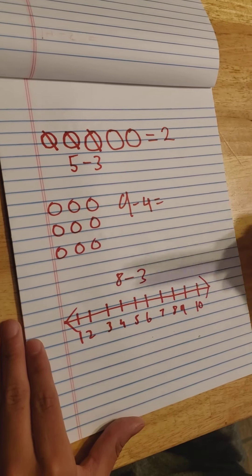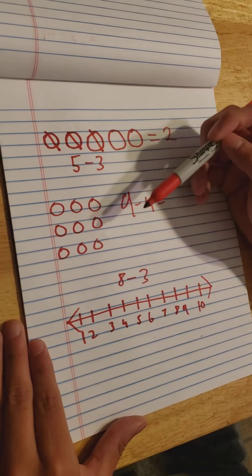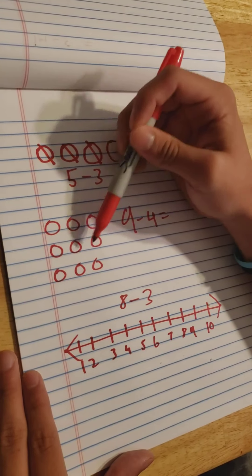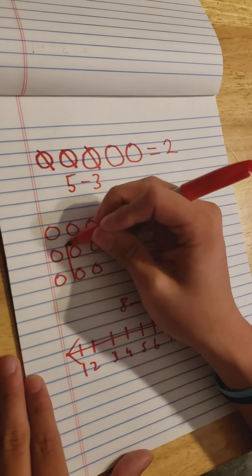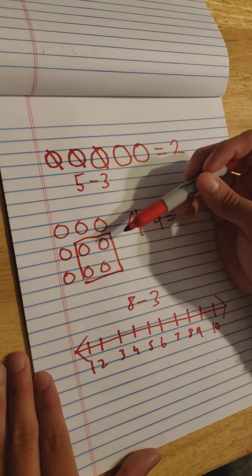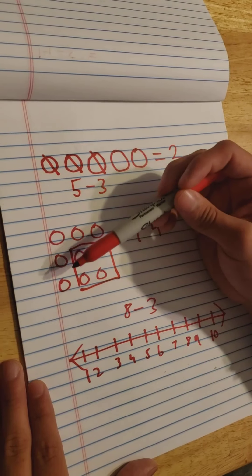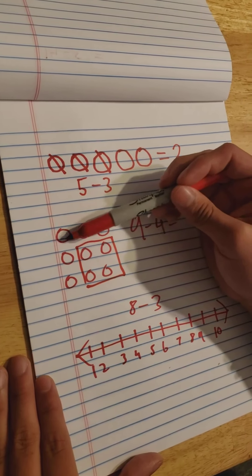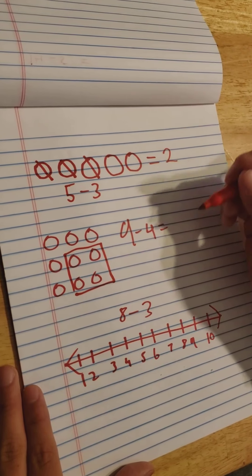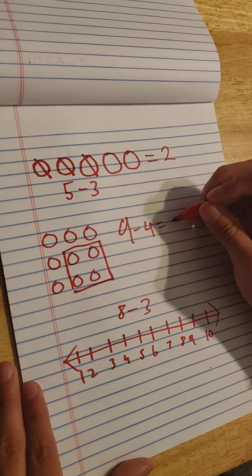Moving on to a more advanced word problem, we have 9 minus 4. So we see that there are 9 objects. Now if we group these 4 in the corner together, we would count the outer of what is left and we would get 1, 2, 3, 4, and 5 left over. Therefore we know that 9 minus 4 equals 5.